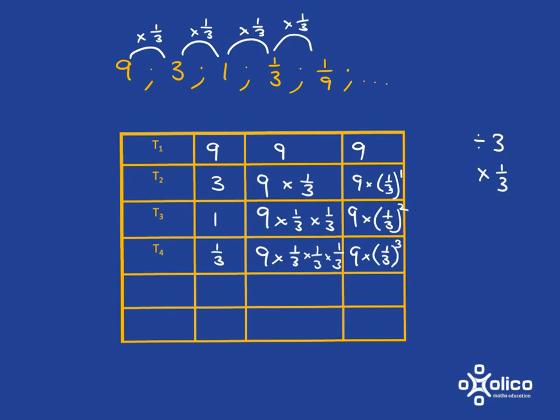And funnily enough, this first one, just so we can also write it with a power, is 1/3 to the power of zero is just 1, right? So this is 9 times 1. So it's 9 times 1/3 to the power of 0.